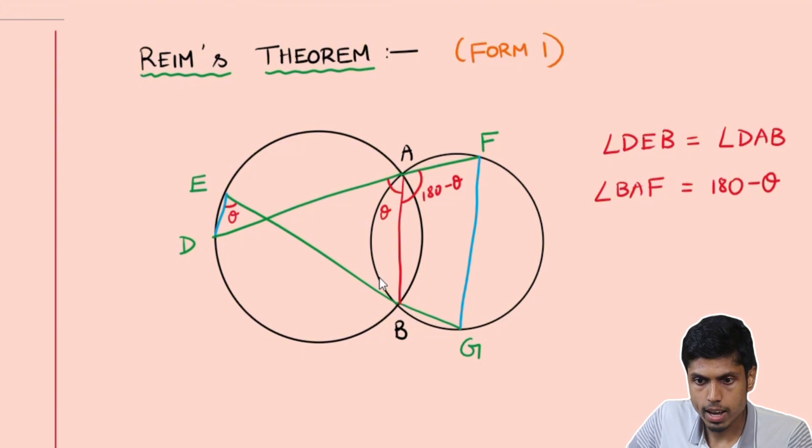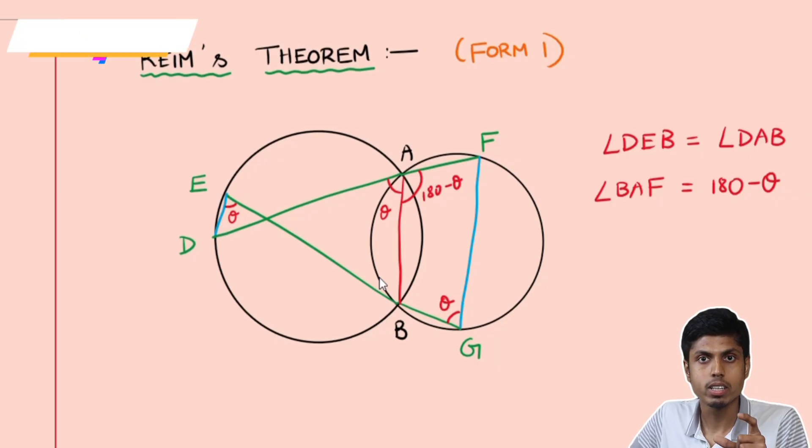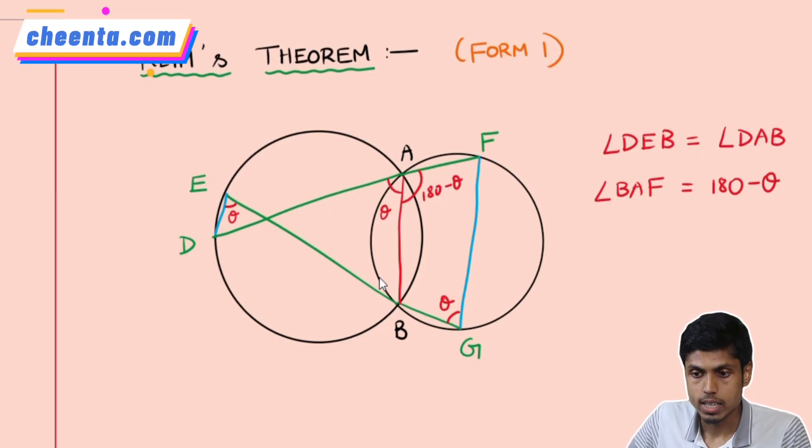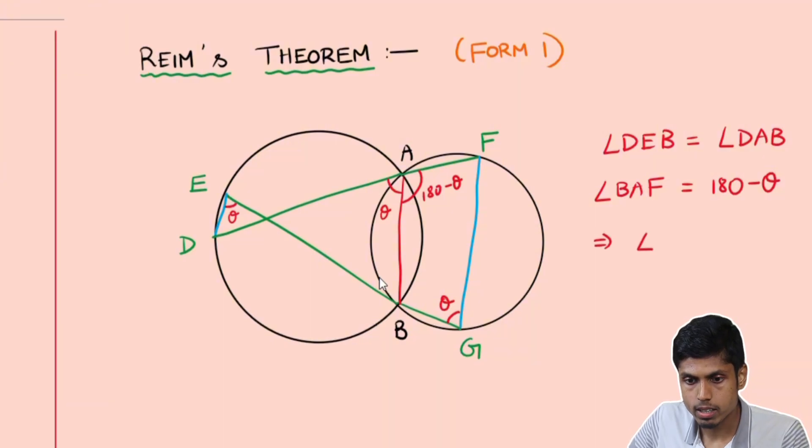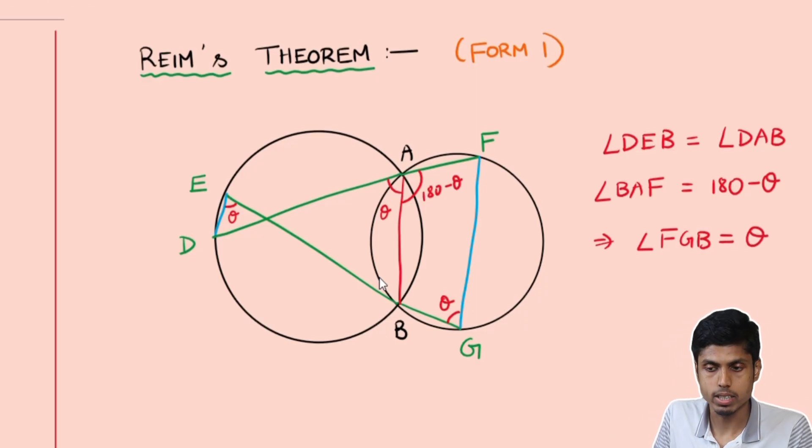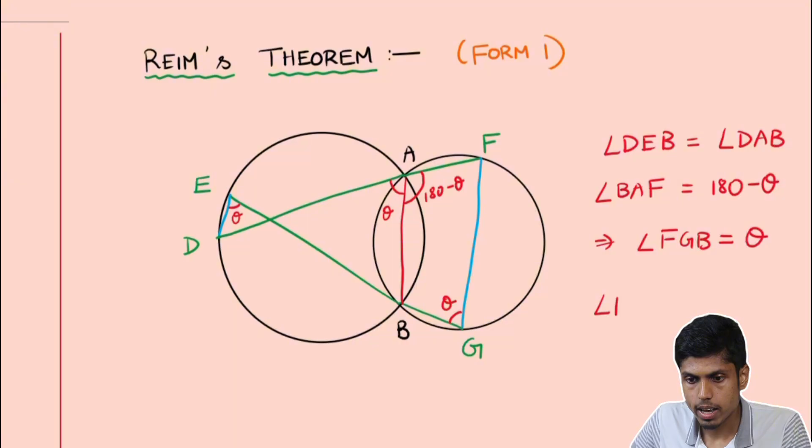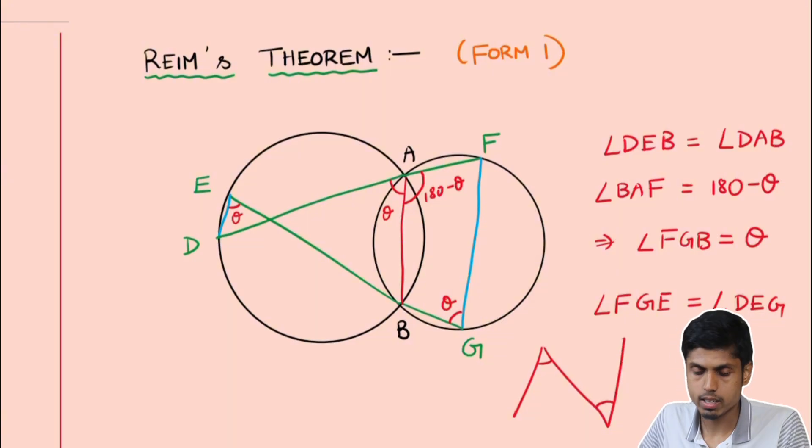And therefore the angle FGB would be theta, as we know the angles in the opposite sides of a quadrilateral are supplementary. Therefore we get angle FGB to be theta. So we get angle FGE equal to angle DEG equal to theta. This implies by the alternate angles in the interior part of the lines DE and FG are equal. This means the lines DE and FG are parallel.